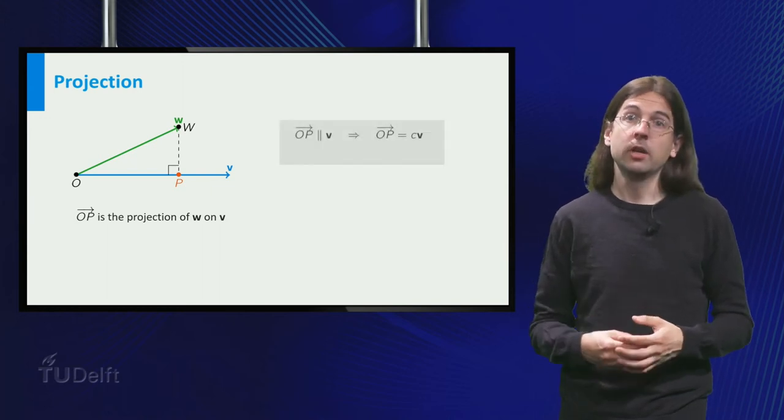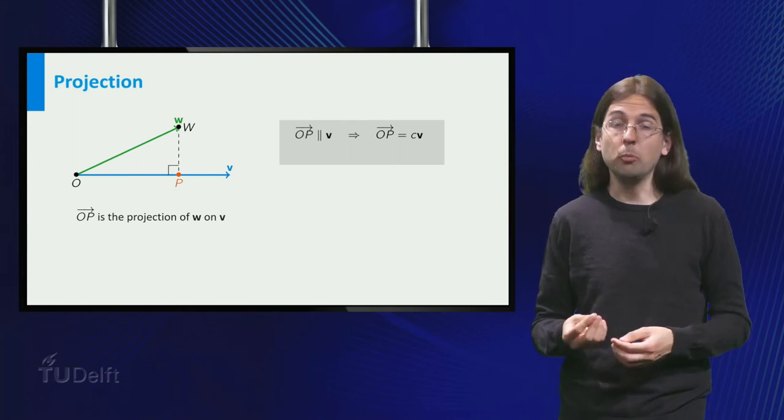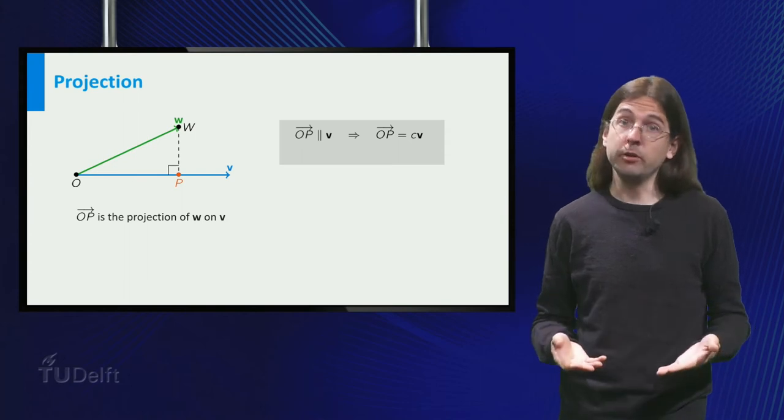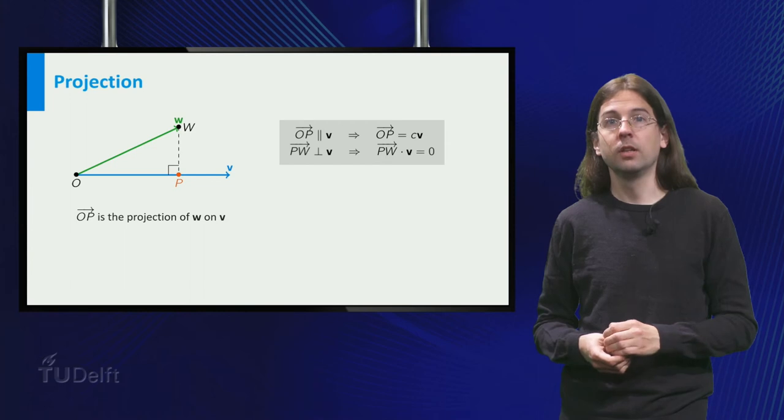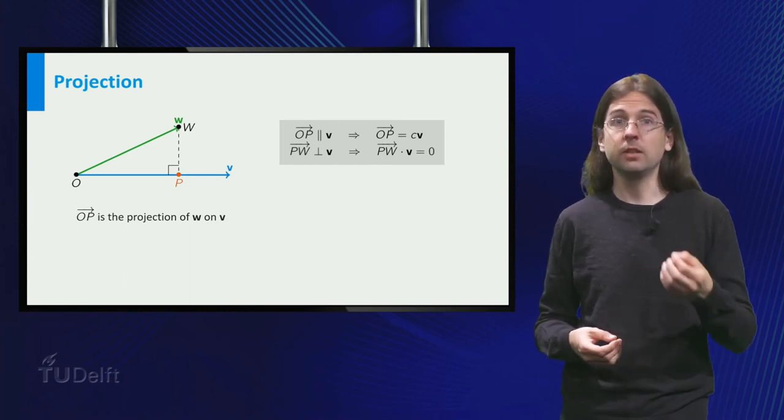Let us look at what properties p or the projection vector op has. First of all, the vector points in the same direction as v, so op is a multiple of v. And moreover, pw is perpendicular to v, which means that the dot product of pw with v equals 0.